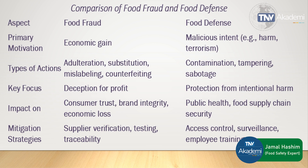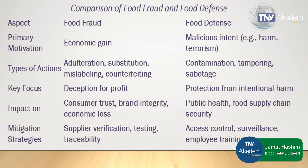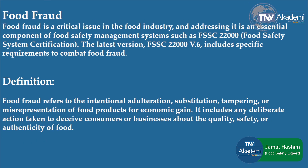Comparing food fraud and food defense: the primary motivations are economic gain versus malicious intent such as harm and terrorism. In food fraud, types of action include adulteration, substitution, mislabeling, and counterfeiting. In food defense, actions include contamination, tampering, and sabotage. The key focus of food fraud is deception for profit, while food defense focuses on protection from intentional harm. Impacts include customer trust and economic loss for food fraud, and public health and food supply chain security for food defense. Mitigation strategies include supplier verification and traceability for food fraud, and access control, surveillance, and employee training for food defense.